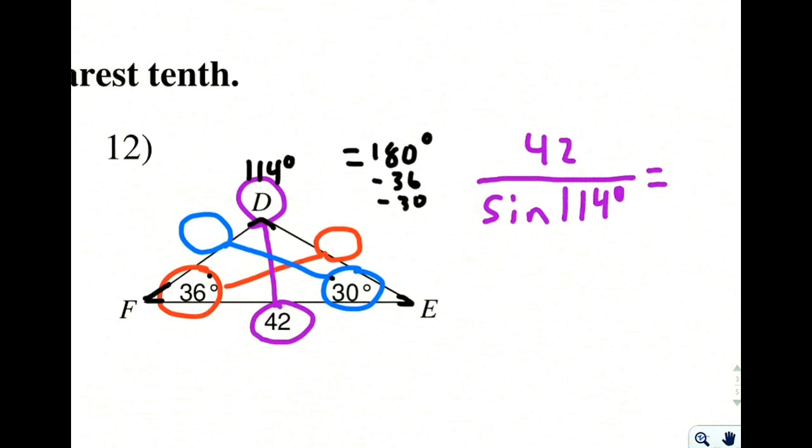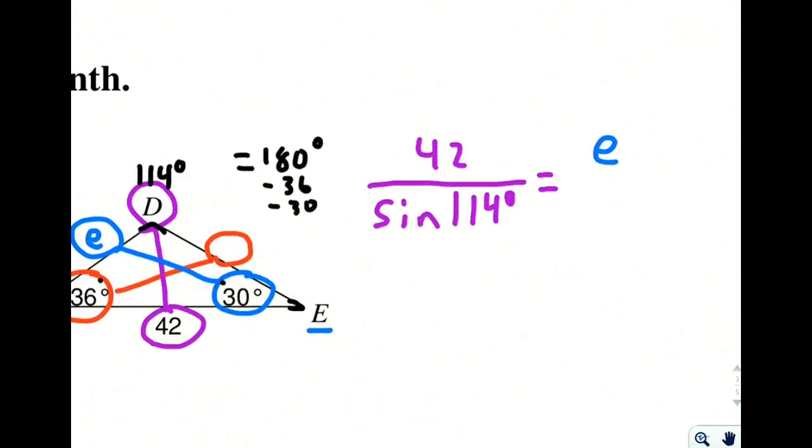So I'm going to give this a name. This is going to be little e because it's across from angle E. And little e divided by the sine of 30.